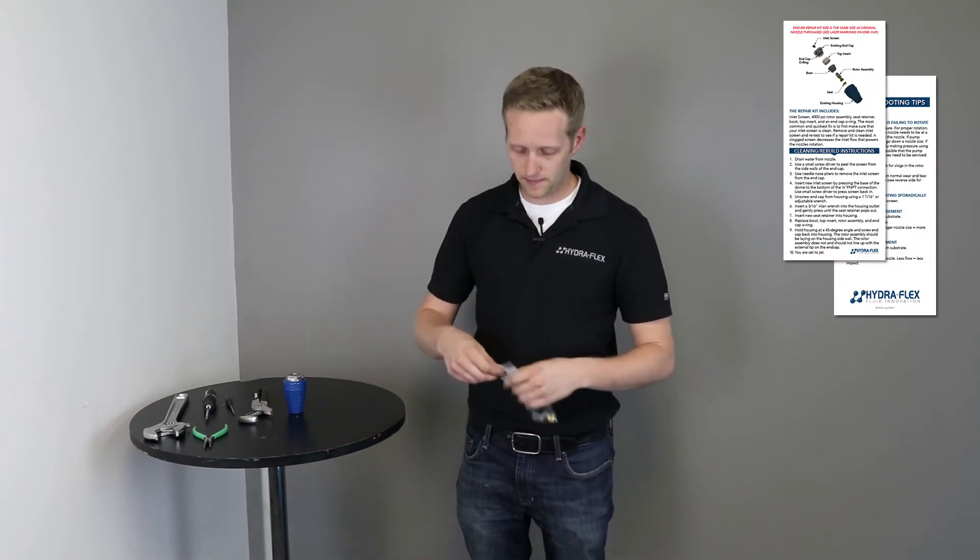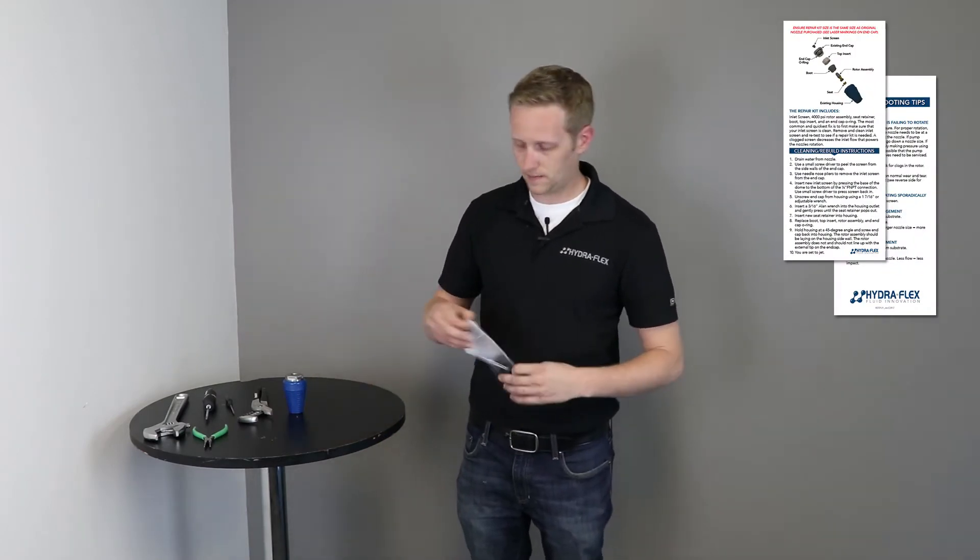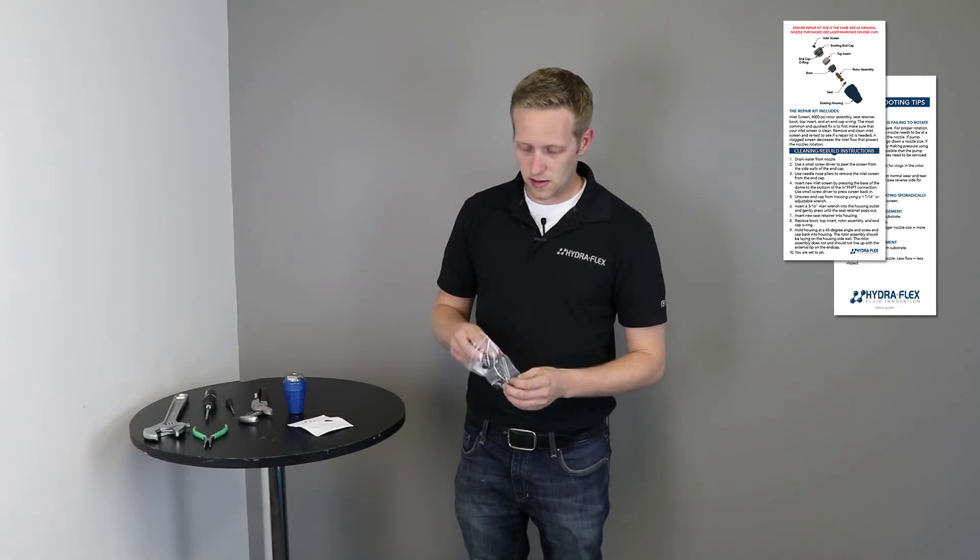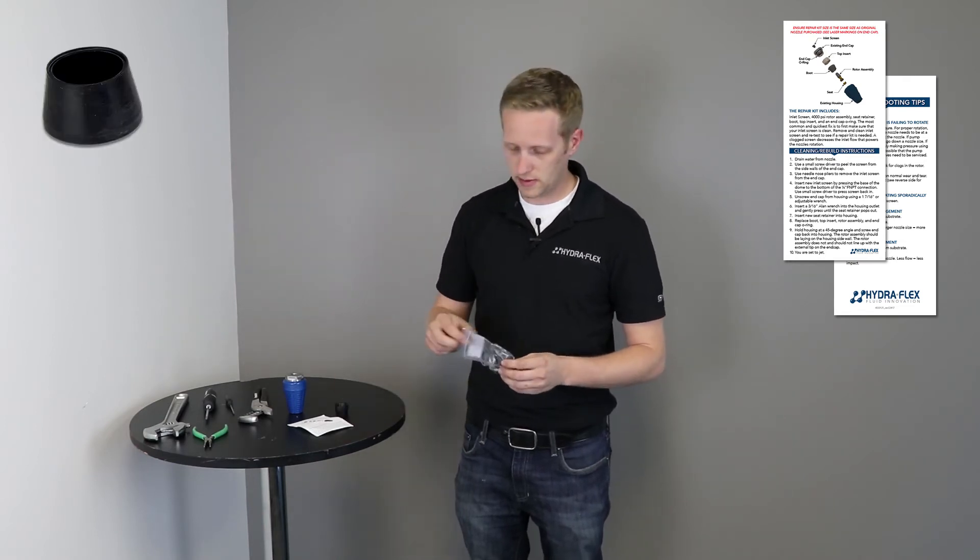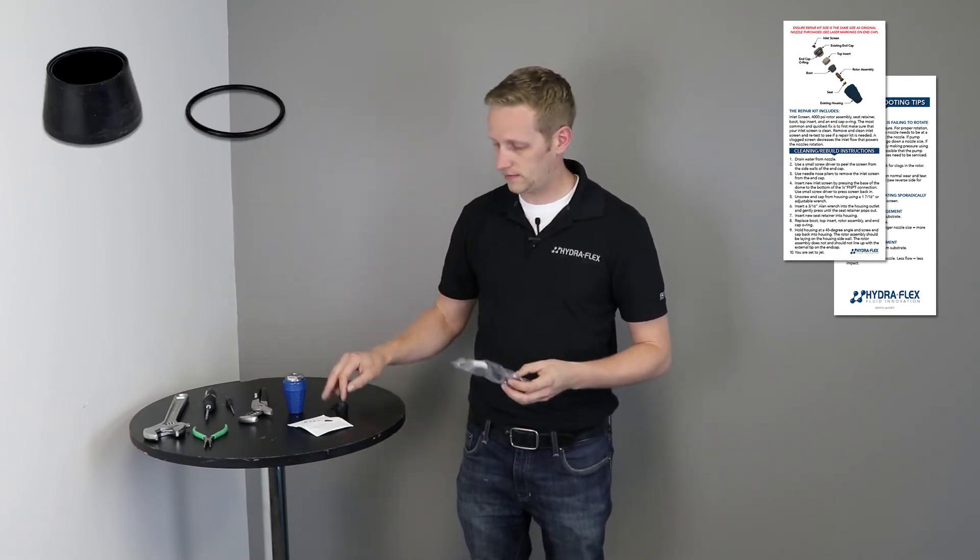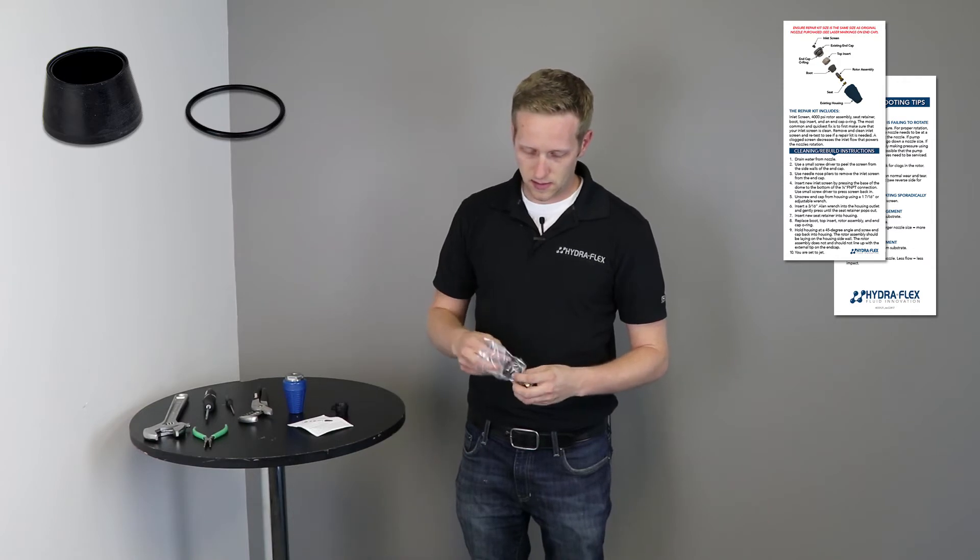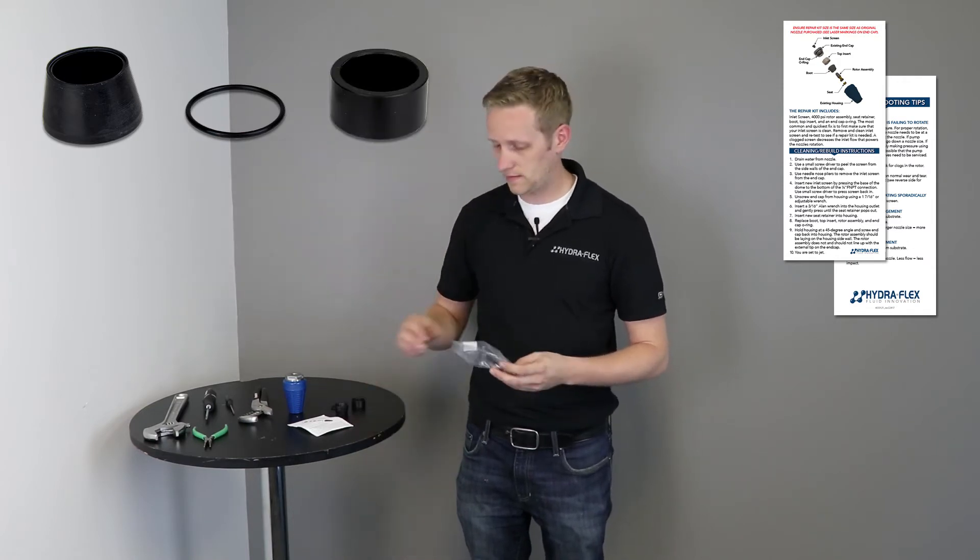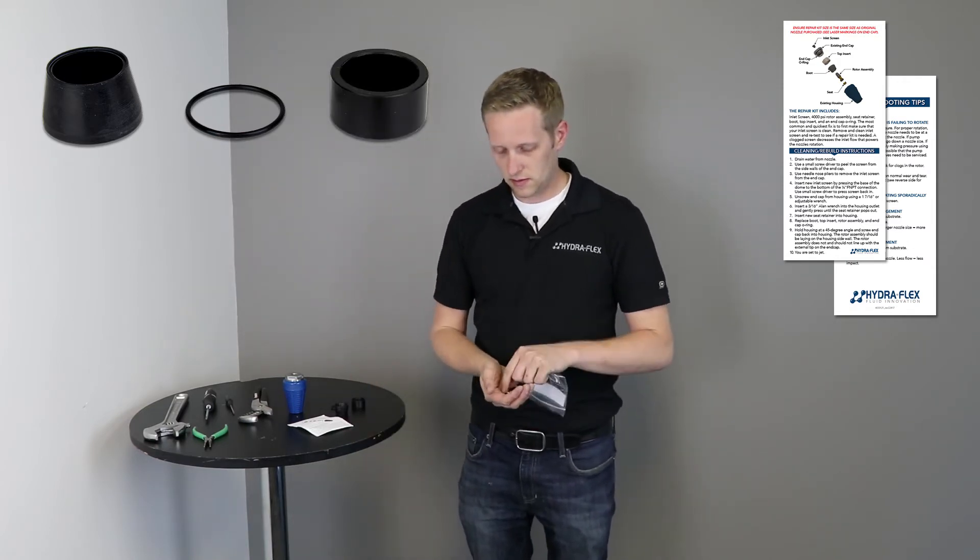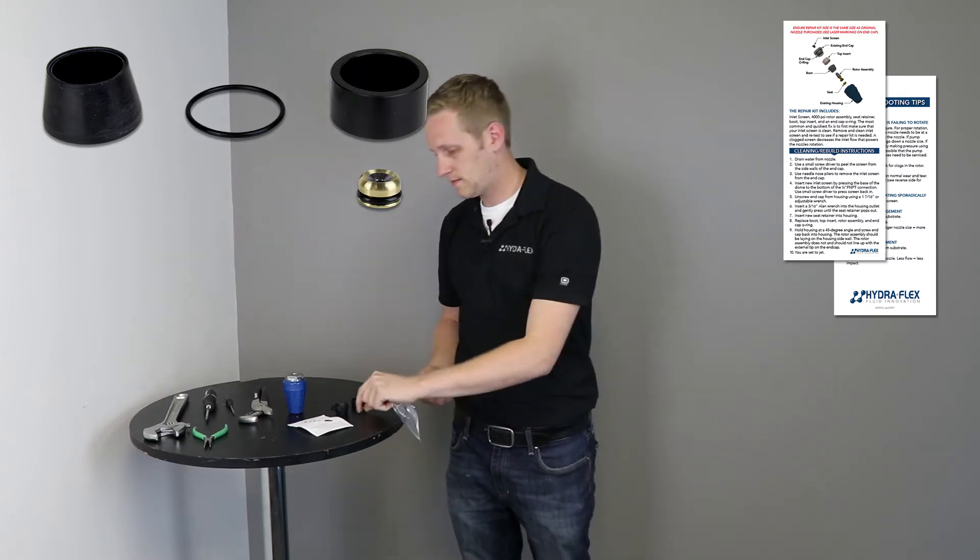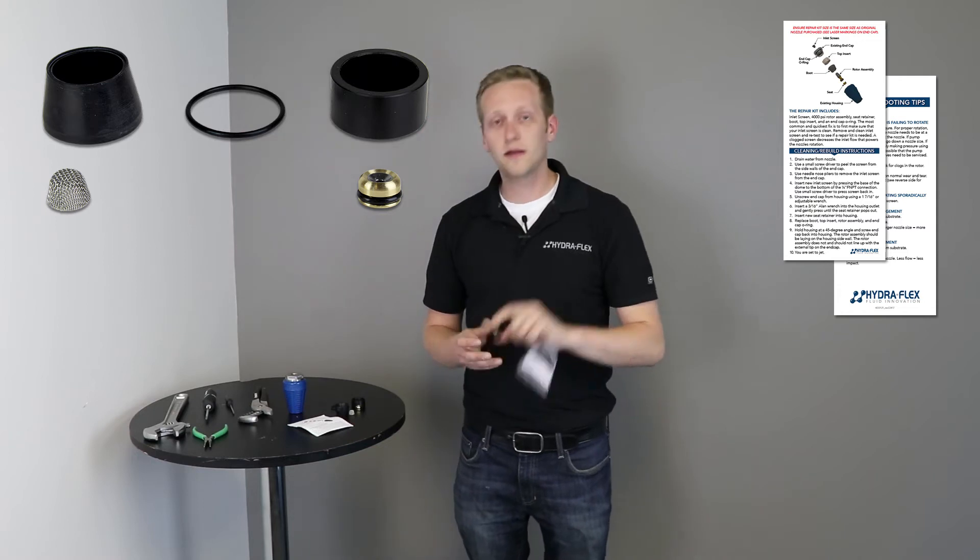Now I'm going to take you through what will be coming inside your repair kit. You will be given an instruction sheet telling you how to install this repair kit, as well as a new rubber boot, a new o-ring, a new top insert, a new seat retainer, a new dome screen, and a new rotor assembly.